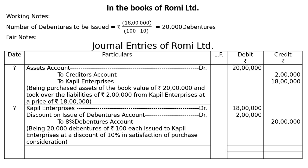The totalling on both the debit and credit columns will be Rs. 40 lakhs. And this is the final answer.